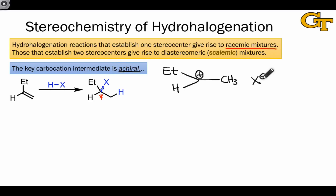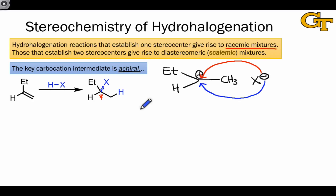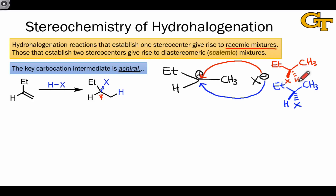When the X⁻ anion approaches this carbocation to complete the mechanism, it can do so in one of two ways: approaching from above the carbocation, or approaching below the carbocation. These two trajectories are enantiomeric. The pathway shown in blue, involving bottom-face approach of X⁻, would give rise to one product, while the pathway in red, involving top-face approach, would give rise to the other. These two molecules are enantiomers, and so we should expect a 50-50 mixture of the two approaches and the two products — this is a racemic mixture.